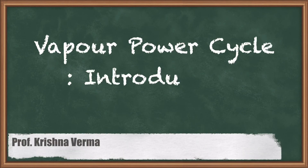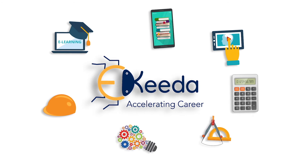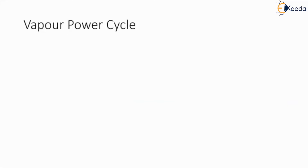In this video I am going to discuss the introduction of vapour power cycle. Vapour power cycle is where the working fluid is considered as water vapour. A cycle which is getting power from vapour is known as vapour power cycle. This cycle we can define as a complete process for the production of work.